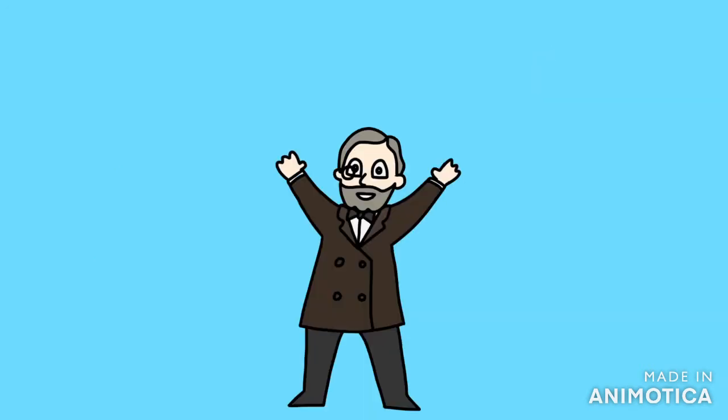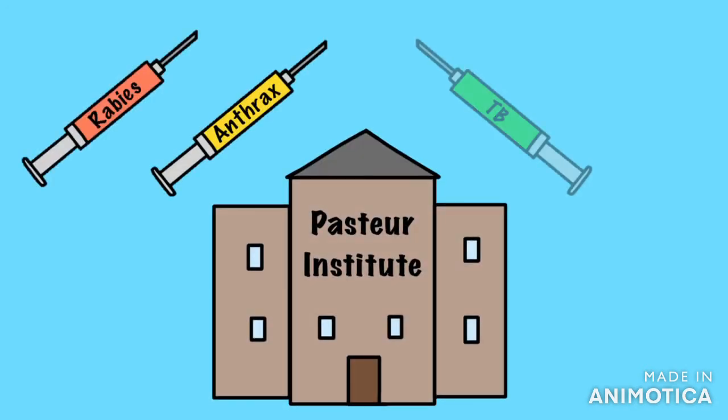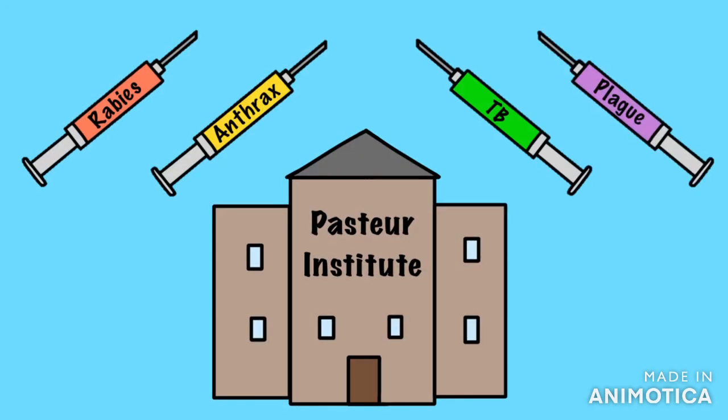Impact on prevention: The theory allowed the development of vaccinations from the work of Jenner, who previously couldn't prove his work. The Pasteur Institute was able to develop vaccines for rabies, anthrax, TB, and the plague. Vaccines remain common practice to this day, wiping out diseases such as smallpox.